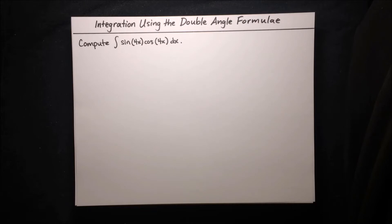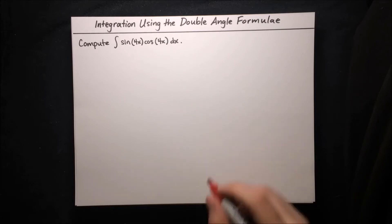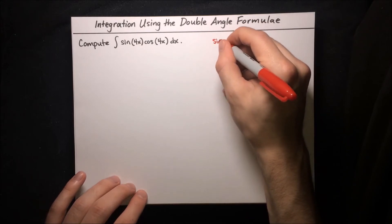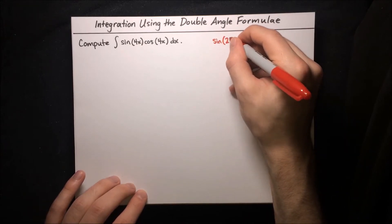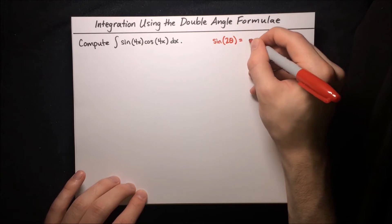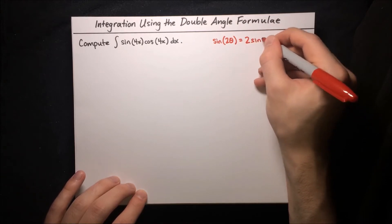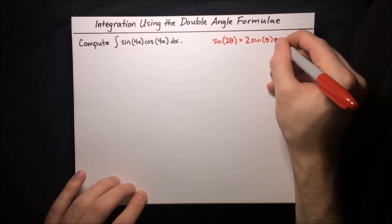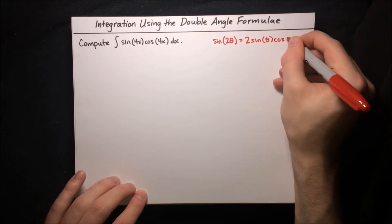Here's our first integral. We want to compute the integral of sine of 4x times cosine of 4x. Initially, it looks like we might have to use substitution for this integral, but there's a much easier way if you remember the double angle formula for sine, which goes like this: sine of 2θ is equal to 2 sine of θ times cosine of θ.